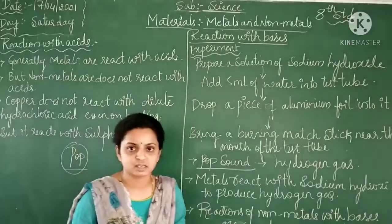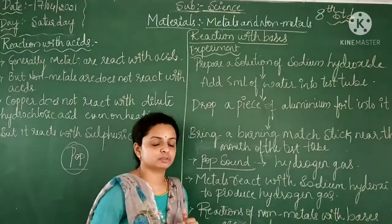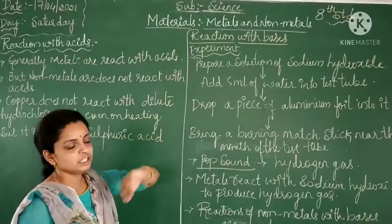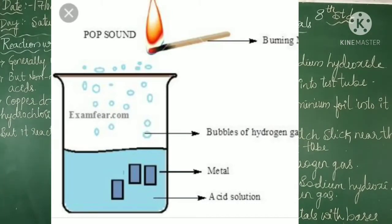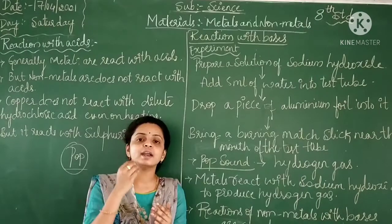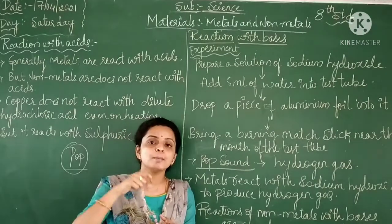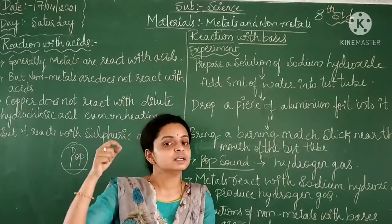Next, the reaction with bases. There is an experiment. You prepare a solution of sodium hydroxide in a test tube. Take a clean test tube and prepare the solution of sodium hydroxide, and to that test tube add 5 ml of water. When it is mixed with sodium hydroxide and water, you just add a drop of aluminium foil into the test tube.